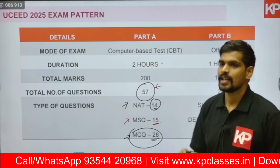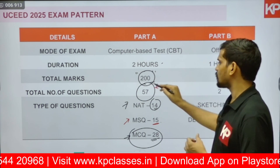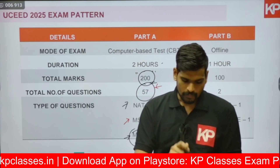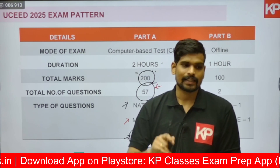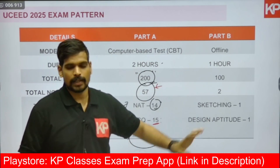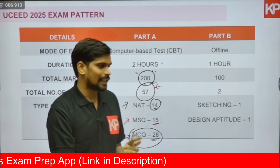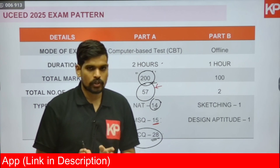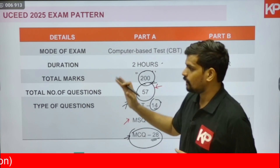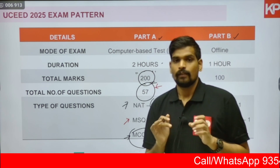So Part A has 57 questions in total — across NAT, MSQ, and MCQ types — carrying a combined weightage of 200 marks, to be attempted in 120 minutes. For Part B, the sketching test is one hour long with just two questions of 50 marks each. One question is from sketching (drawing) and the other is from design aptitude. The final rank in UCEED is determined by considering both Part A and Part B scores, with Part A carrying double weightage of 200 marks.